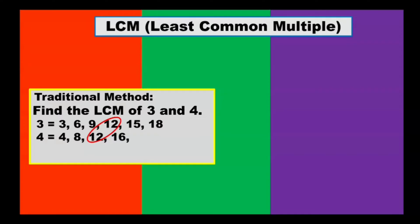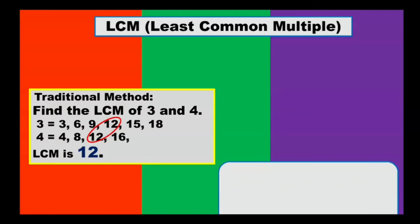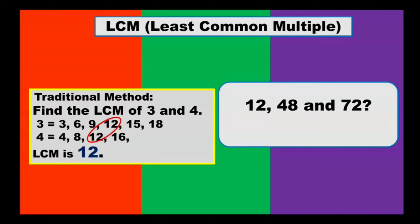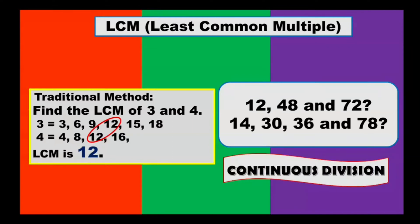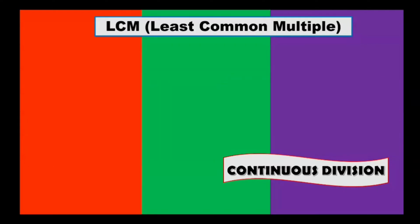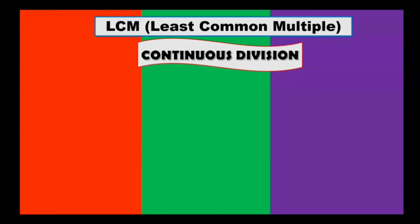The common multiple we can see from both 3 and 4 is 12, so the LCM of 3 and 4 is 12. But what if there are several given numbers, like 12, 48, and 72? Is it practical to use the traditional listing method? No, it will take too much time. So just like what we did with GCF, we will use continuous division to find the LCM of three or more numbers.